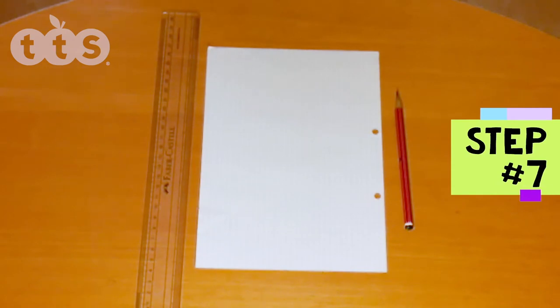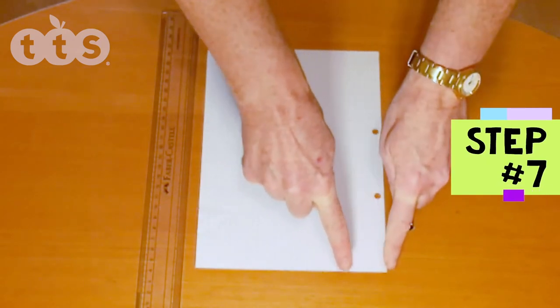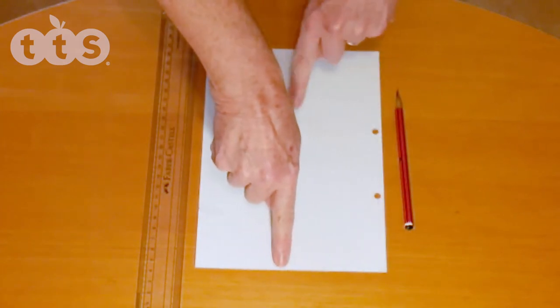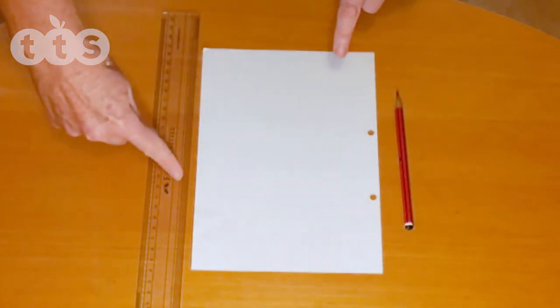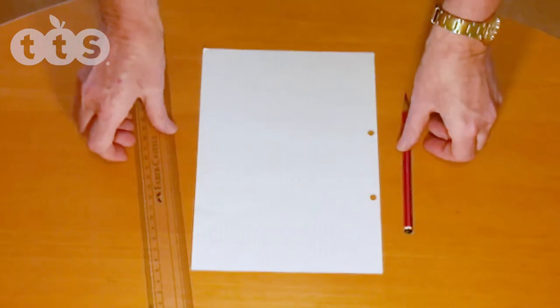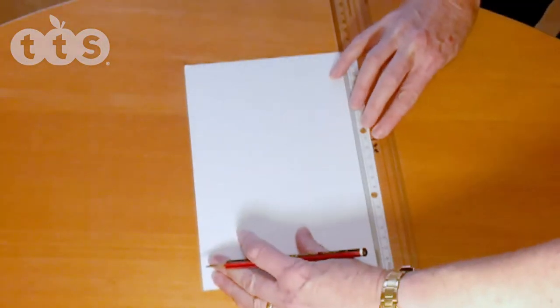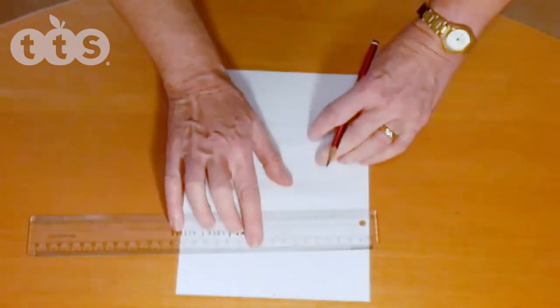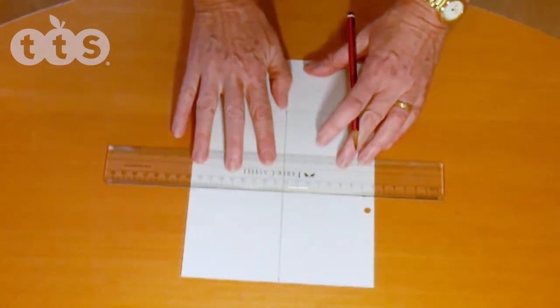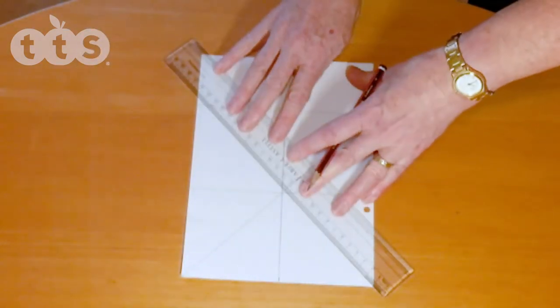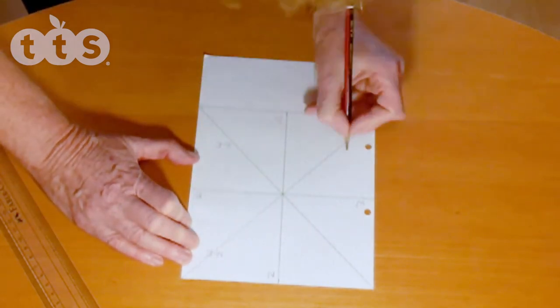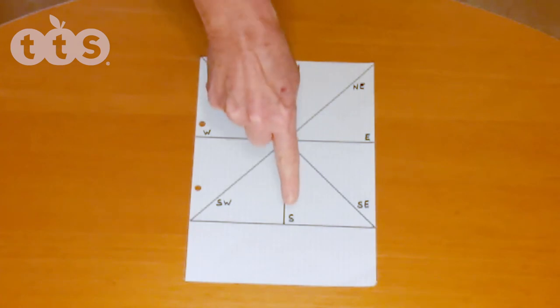Step seven is to mark up the paper with the points of the compass. Take the paper and measure the short side. Draw a line at this distance from the short side to make a square. Mark halfway along each side of the square and join the marks to make a cross. Draw another cross from corner to corner. Then mark on the points of the compass.